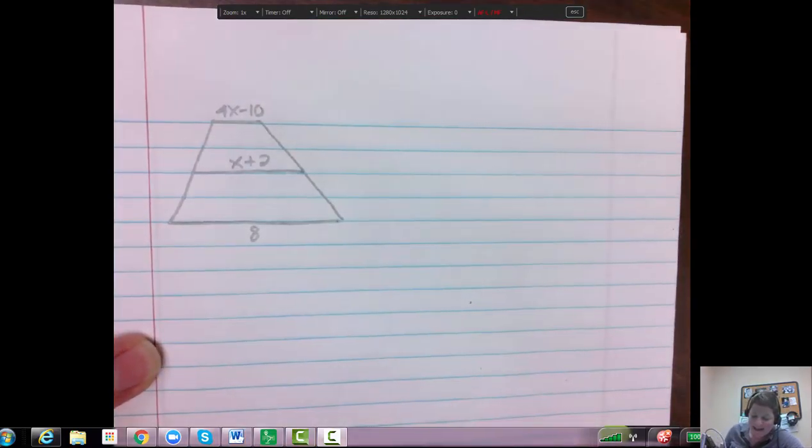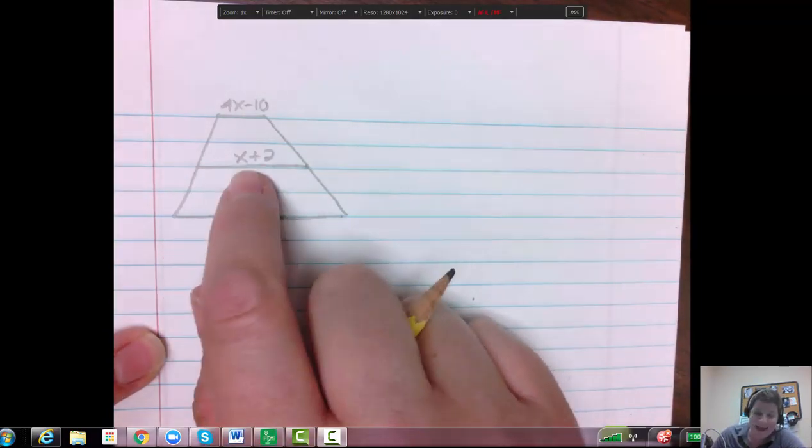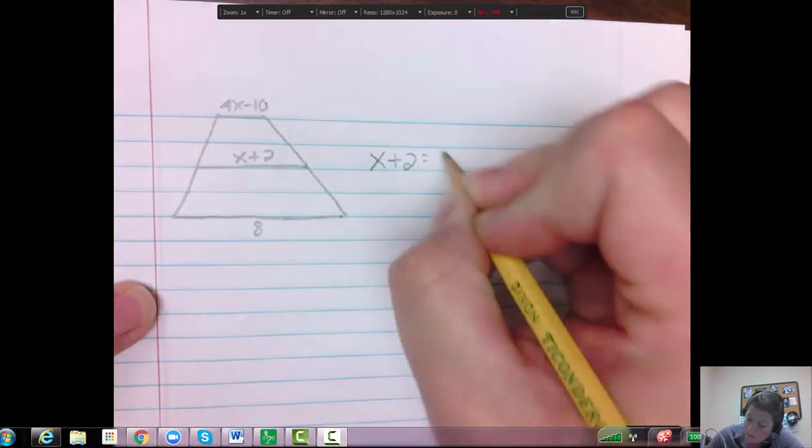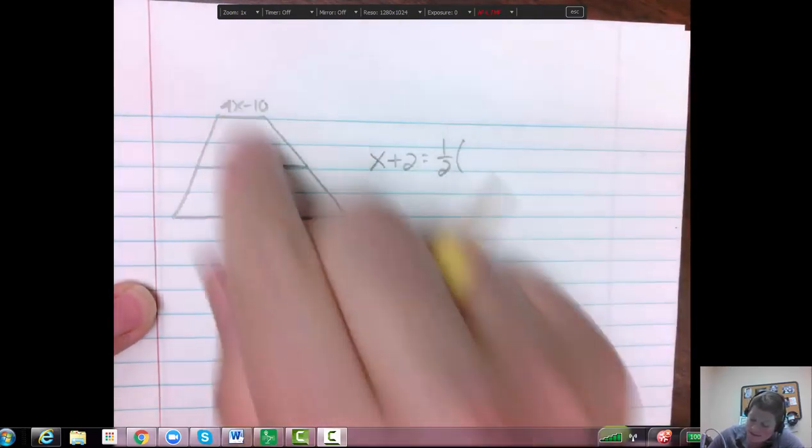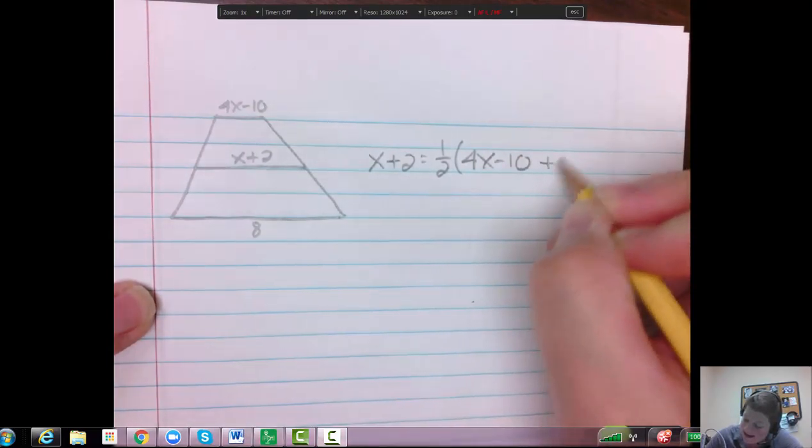All right, and I say okay, this is x plus 2, this one's 8, and this one's 4x minus 10. What is the length of that midsegment? I could label it, but either way, what is that length of that midsegment? Well, we know it's x plus 2, and it will equal one half this one plus this one, so 4x minus 10 plus 8, and then you have to solve that formula.